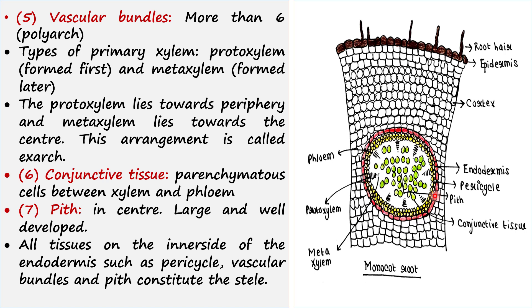There are two types of xylem: protoxylem and metaxylem. Protoxylem is formed first during tissue formation and metaxylem is formed later. Here, the protoxylem lies towards the periphery and the metaxylem lies towards the center. This type of arrangement is called the exarch condition — protoxylem in the periphery and metaxylem in the center.